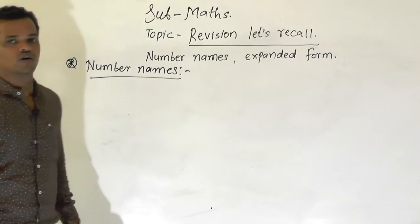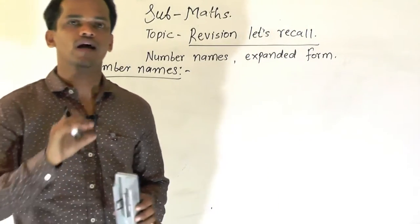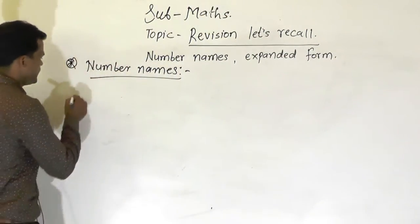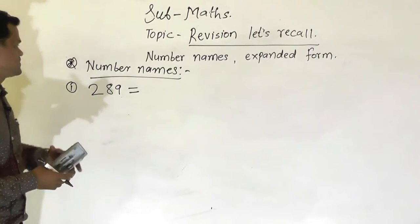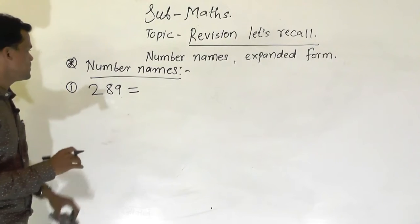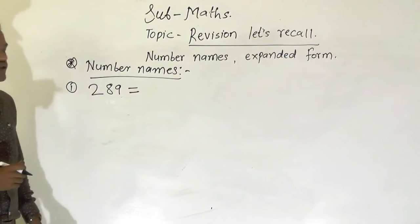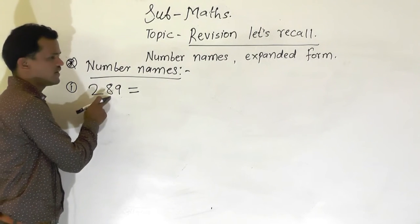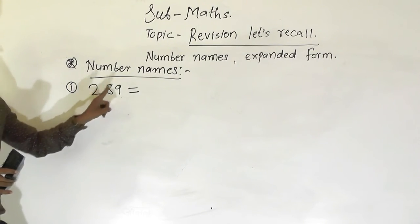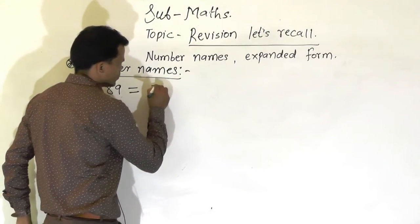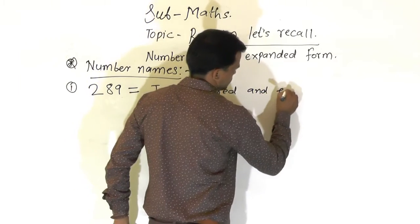Number names. In the exam, the question will come like this: the number is given in numerals and we have to write the number names. Now I am writing one number here: 289, and we have to write this number in spelling. First you have to see the place values and identify the number. 9 comes at the ones place, 8 comes at the tens place, and 2 comes at the hundreds place. So this number is 289 — write 200 and 89.